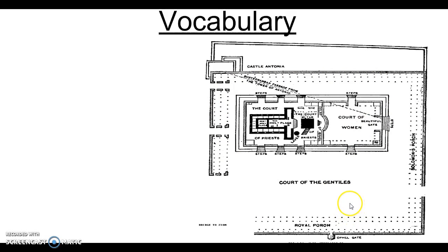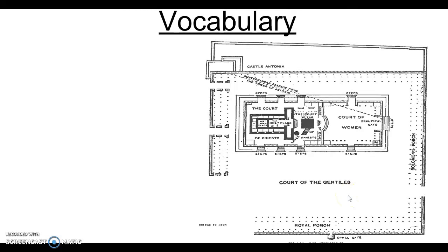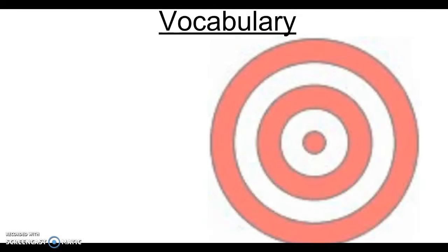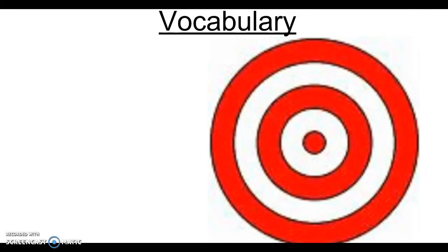Please spell that word correctly: G-E-N-T-I-L-E-S. If you want to draw something — and I think this is worth drawing, though not necessary — I would suggest you draw it like an onion, which has layers.